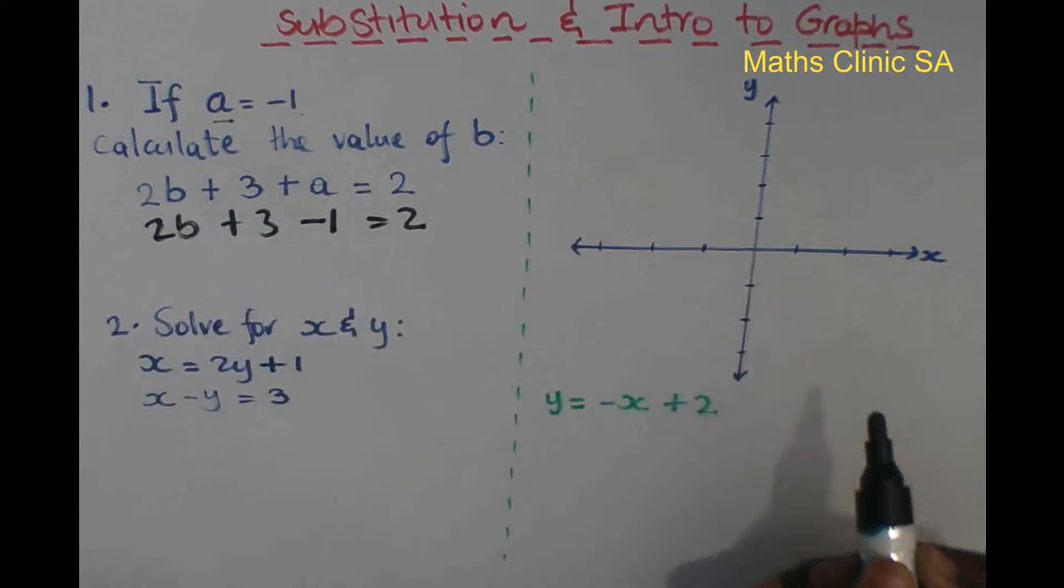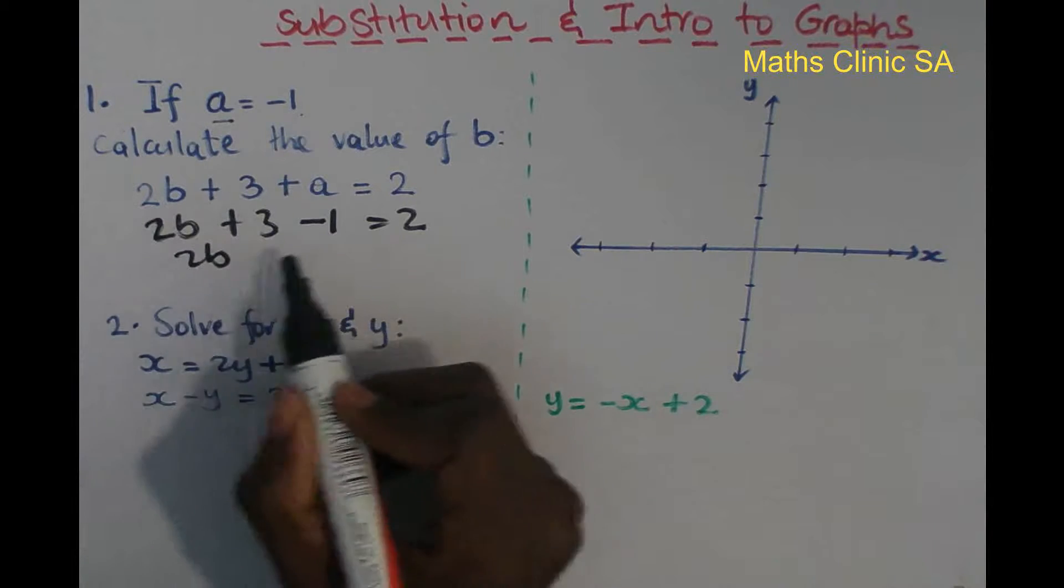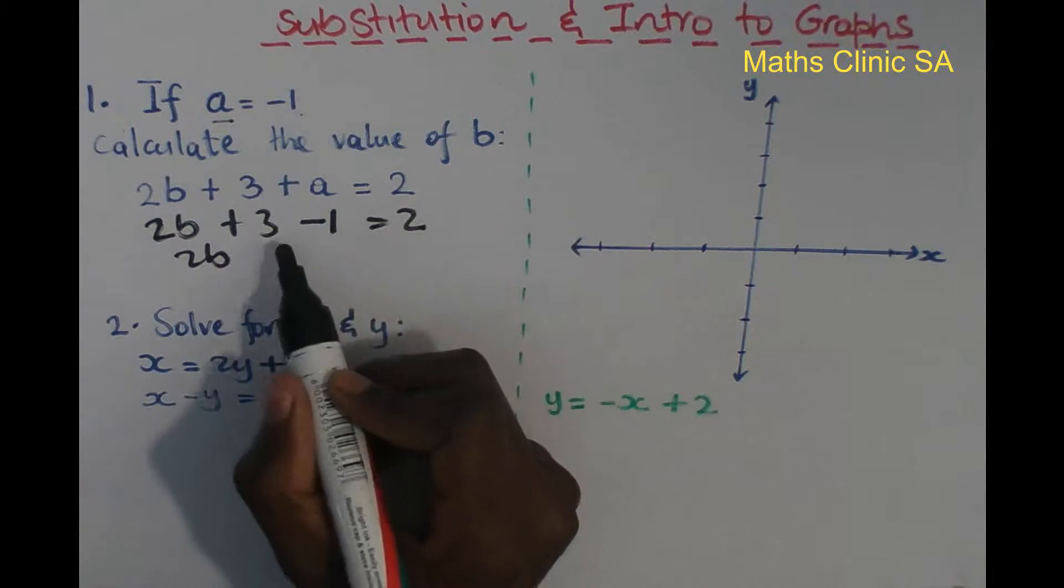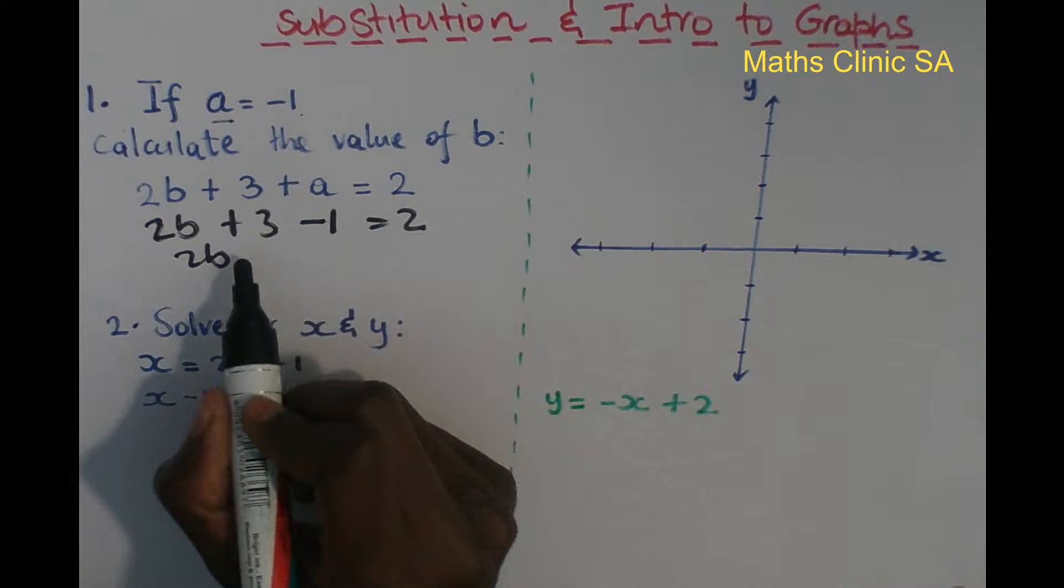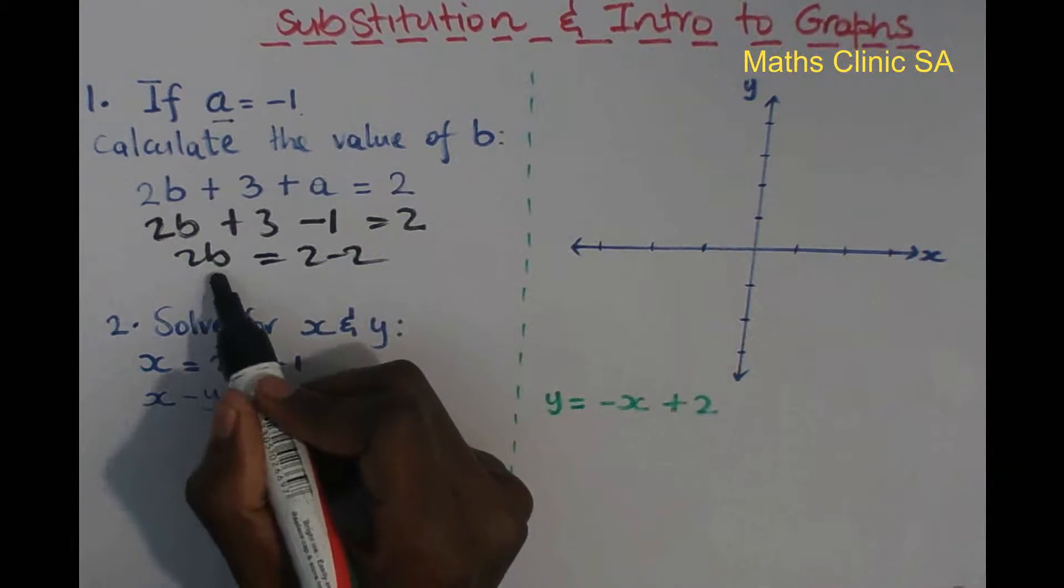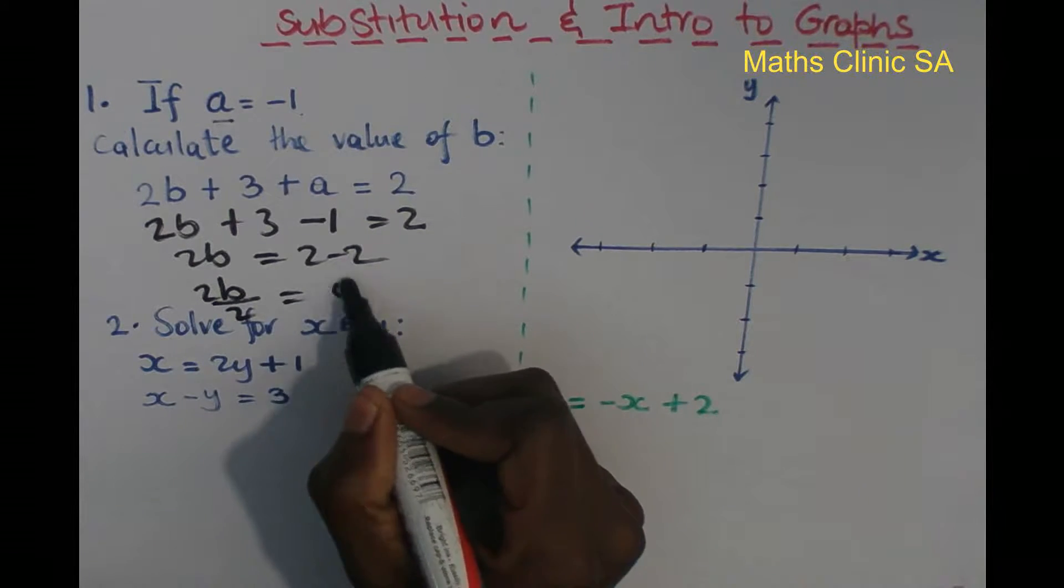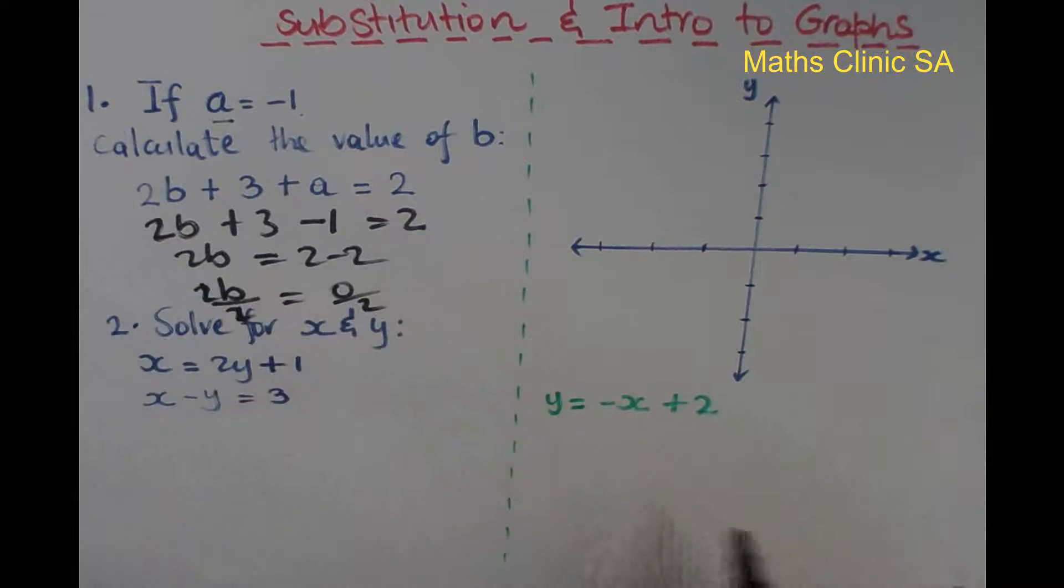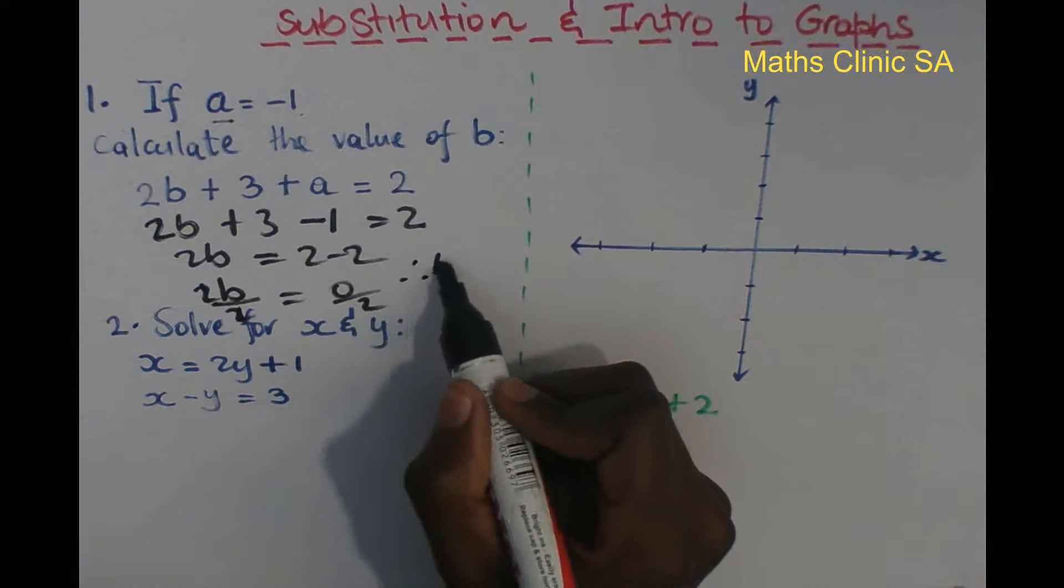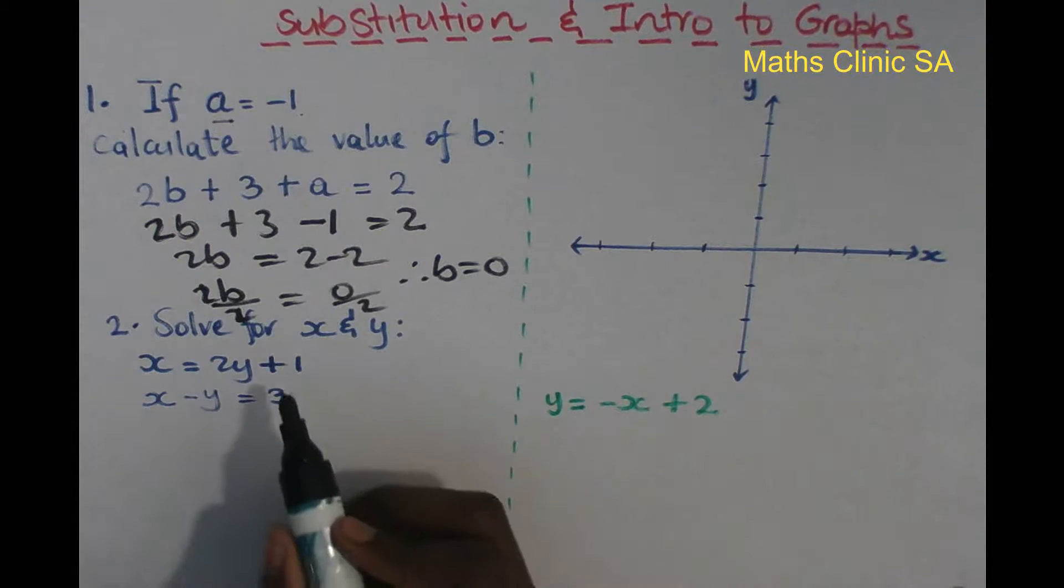Solving this linear equation: 2b + 2 = 2, so 2b = 2 - 2 = 0. Dividing both sides by 2 gives b = 0.